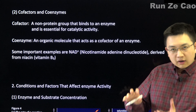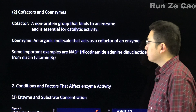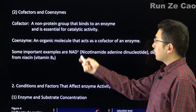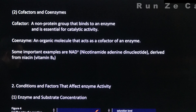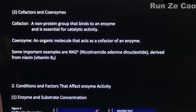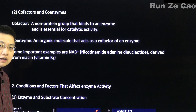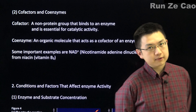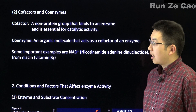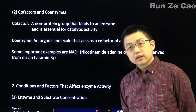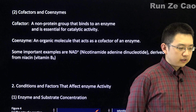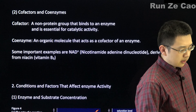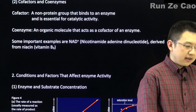When an enzyme needs something that's not a protein in order to work, we call it a cofactor. Many vitamins are cofactors or coenzymes — for example, nicotinamide adenine dinucleotide (NAD), which is derived from niacin or vitamin B3. Other common examples include coenzyme A (acetyl-CoA, important in mitochondria) and FADH. Coenzymes are organic molecules that act as cofactors.